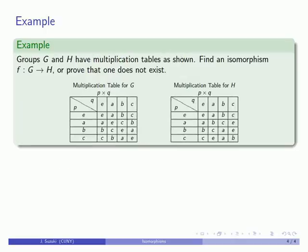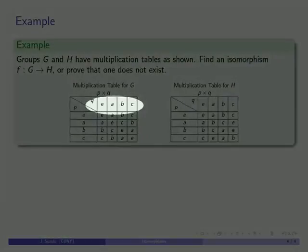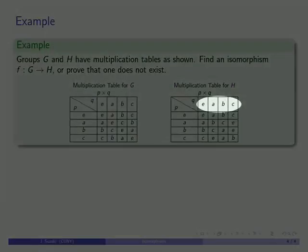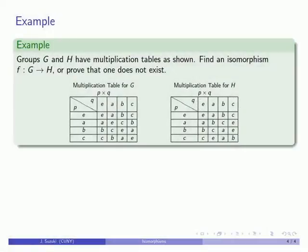Let's take a different set of groups, groups G and H. And here I have the multiplication tables as shown. G has four elements: A, B, C, and the identity. H has four elements: A, B, C, and the identity.